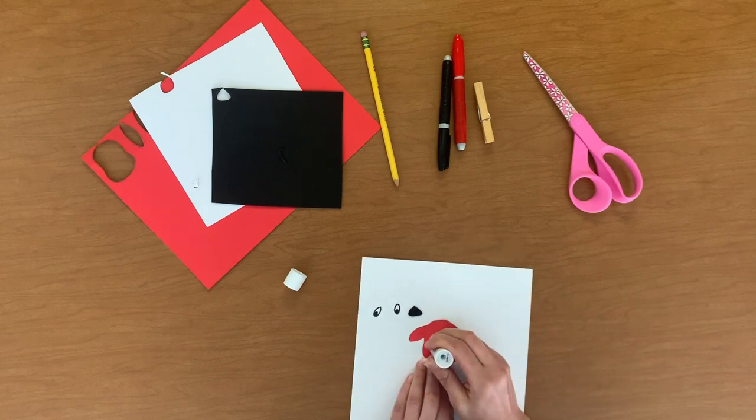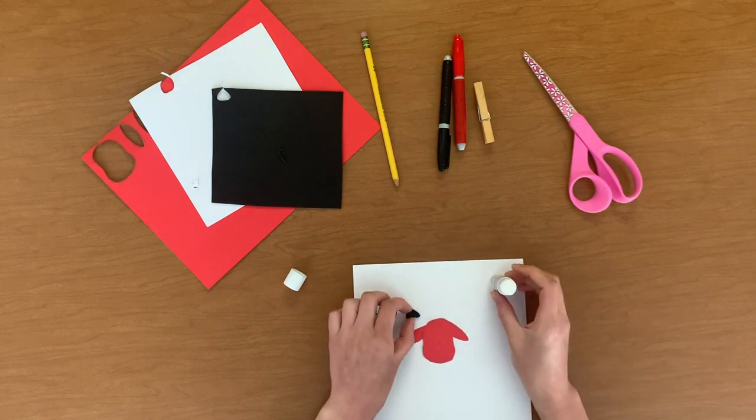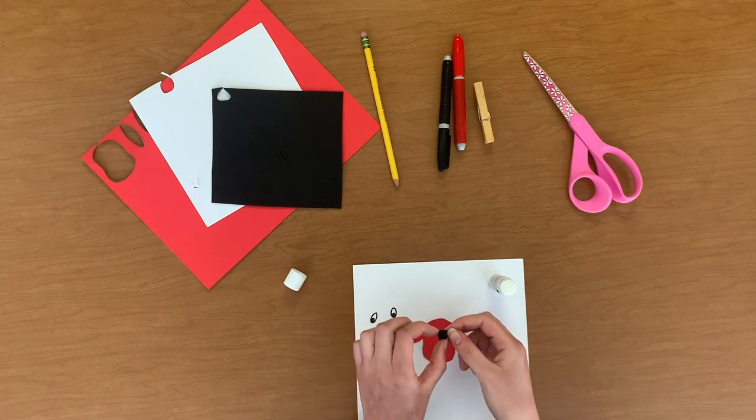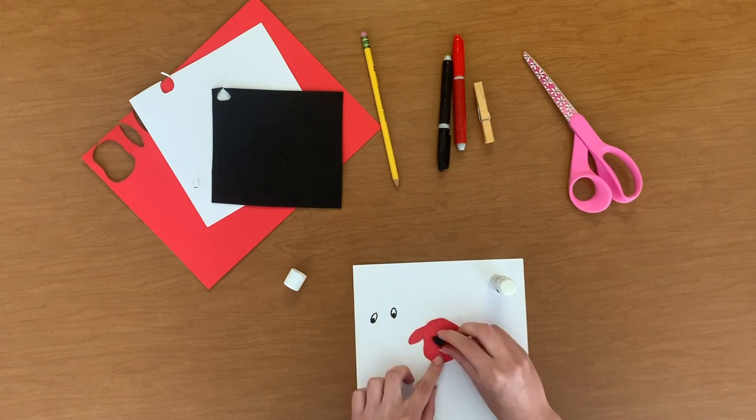Next, use a large dot of glue to glue your black triangle to the center of Clifford's face, making sure that the point of the triangle is pointing down.